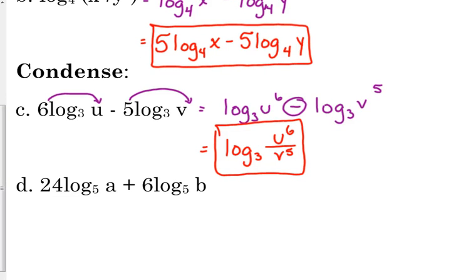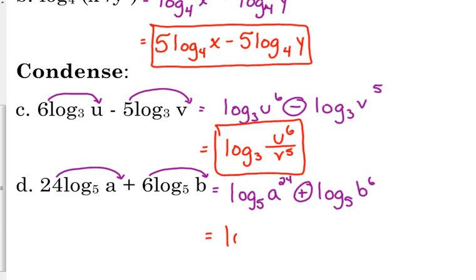So again, before you can combine them into a single logarithm, any coefficients have to become exponents. So that's log base 5 of a to the 24th plus log base 5 of b to the sixth. We're adding those logarithms, so it's a single log of the product, a to the 24th, b to the sixth.